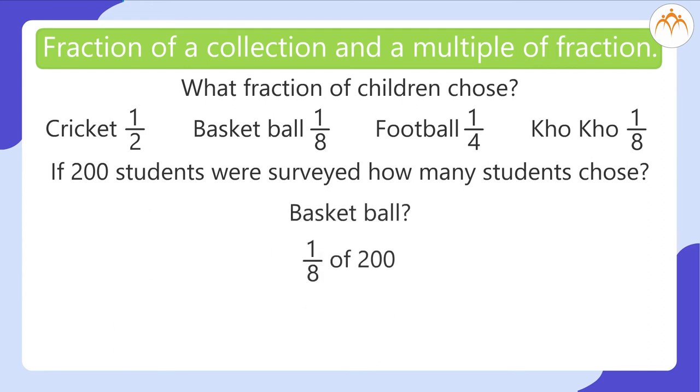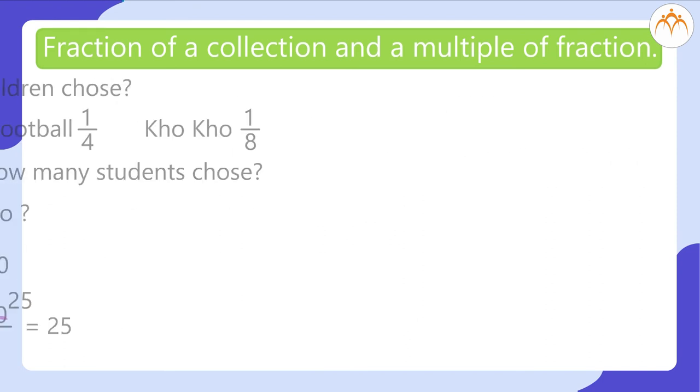Basketball 1 eighth of 200 is 1 by 8 multiplied by 200 which gives us 25. So, 1 eighth of 200 is 1 by 8 multiplied by 200 by 1 which gives us 25. So, Kho Kho was chosen by 25 students.